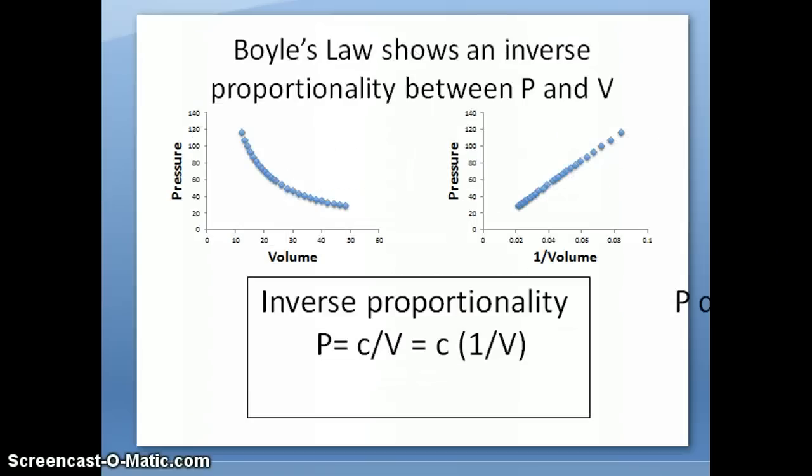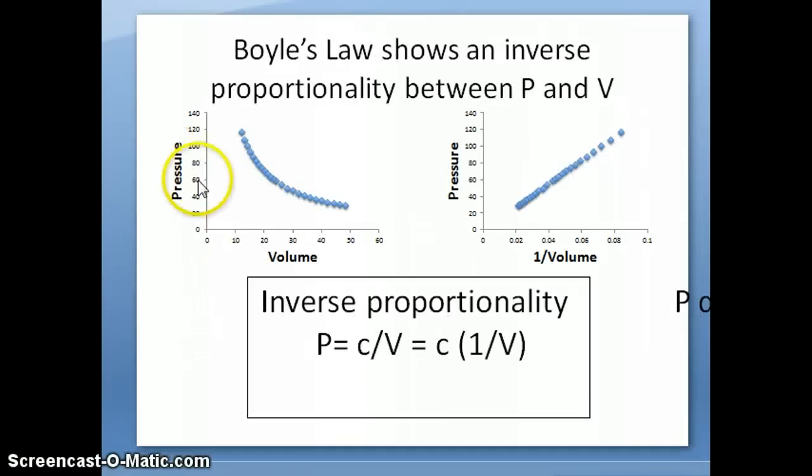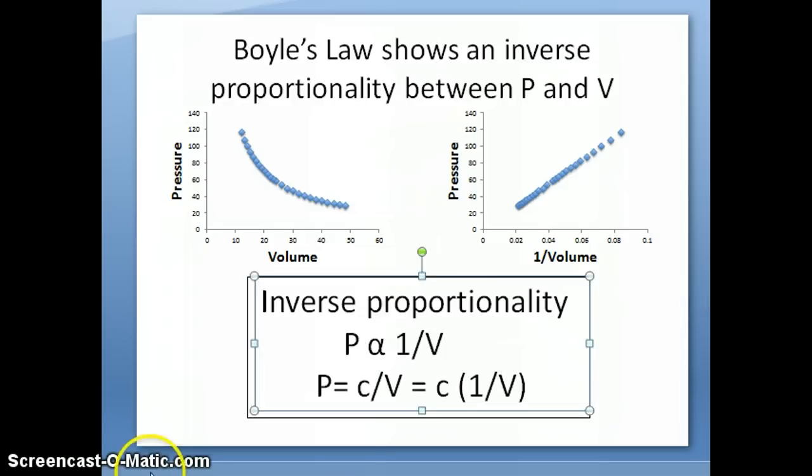We can see this with Boyle's law. Remember I gave you this data of Boyle's experiment. You can actually plot that data, which is shown here. This is just plotting that pressure and volume directly in Excel. What you see here is that there is this relationship that as pressure goes up, volume comes down. But it's not really clear exactly what that relationship is. But when I just plot it as pressure and instead of volume I change this to 1 over volume, I immediately see a straight line relationship.